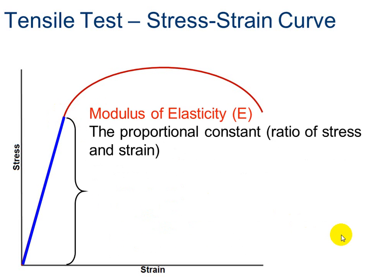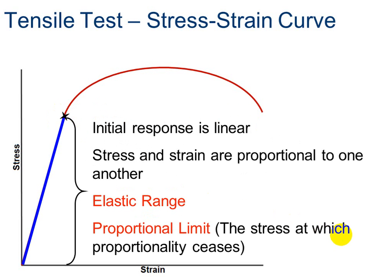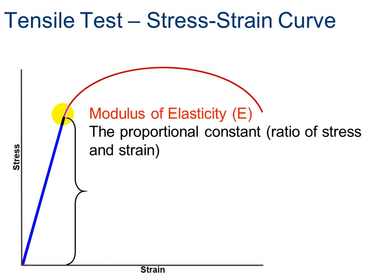What does elastic range mean? Elastic means we can stretch it, and if we stop stretching it before we reach the proportional limit, it will go back to its original shape. We talked about modulus of elasticity when we did the beam deflection — this is the proportional constant. Whatever the slope of this line is — the ratio of stress over strain — that slope is how you find your modulus of elasticity.